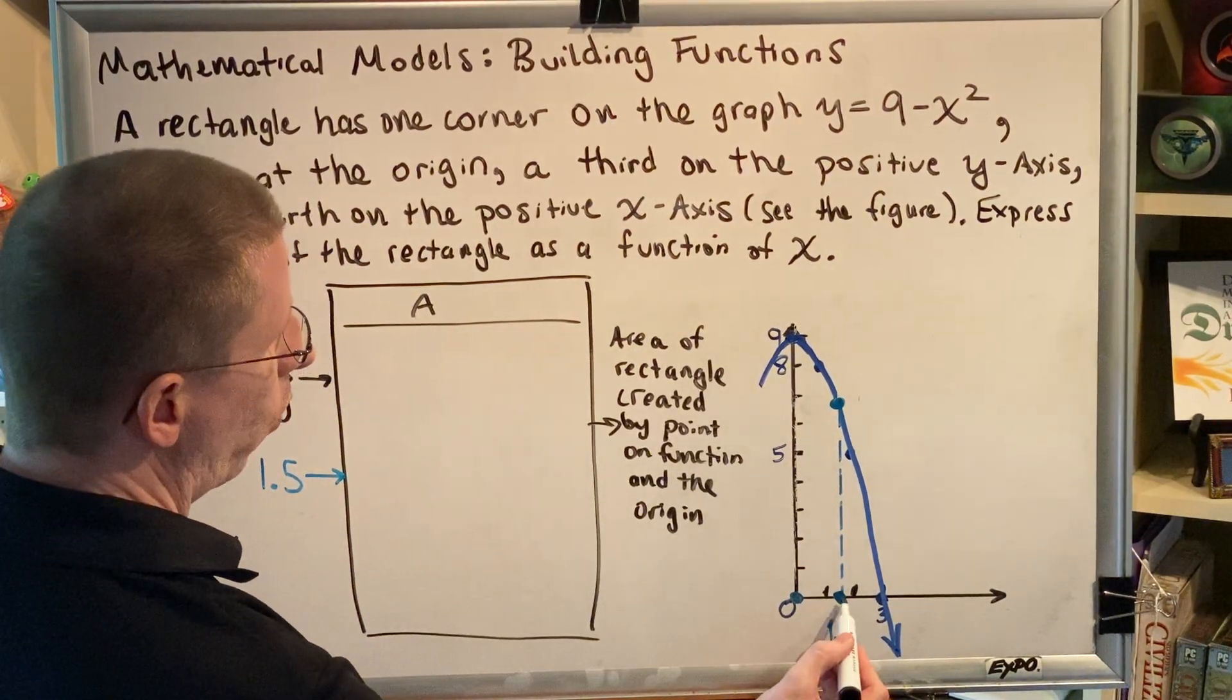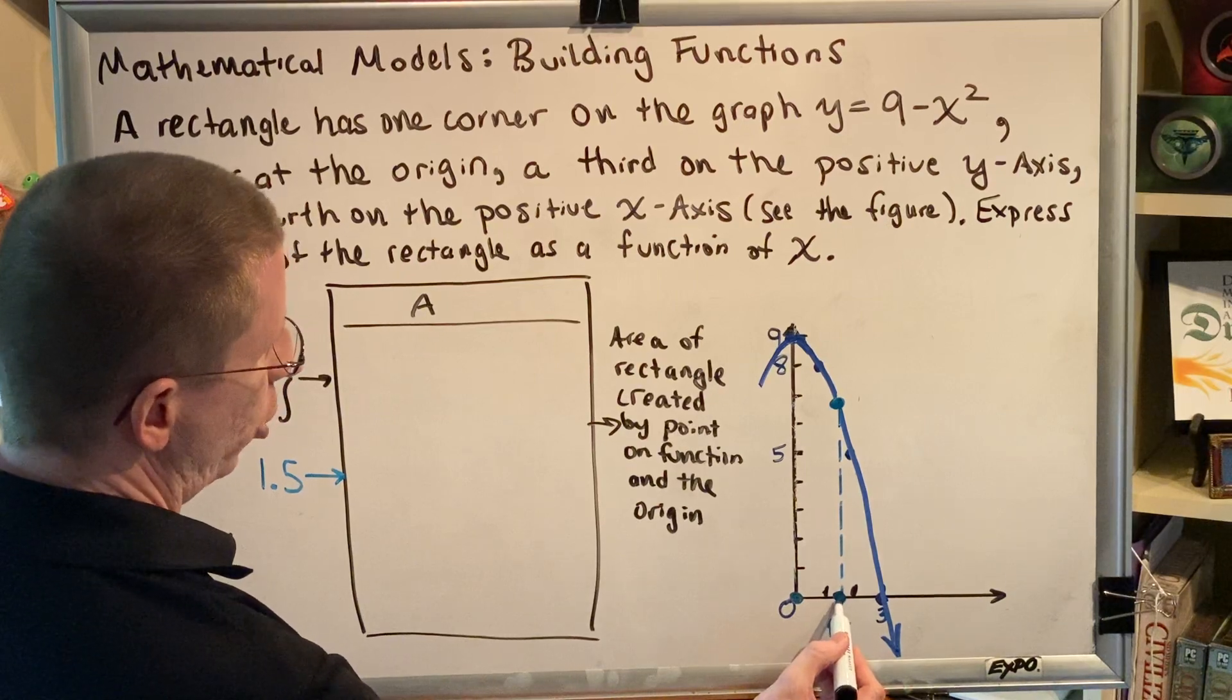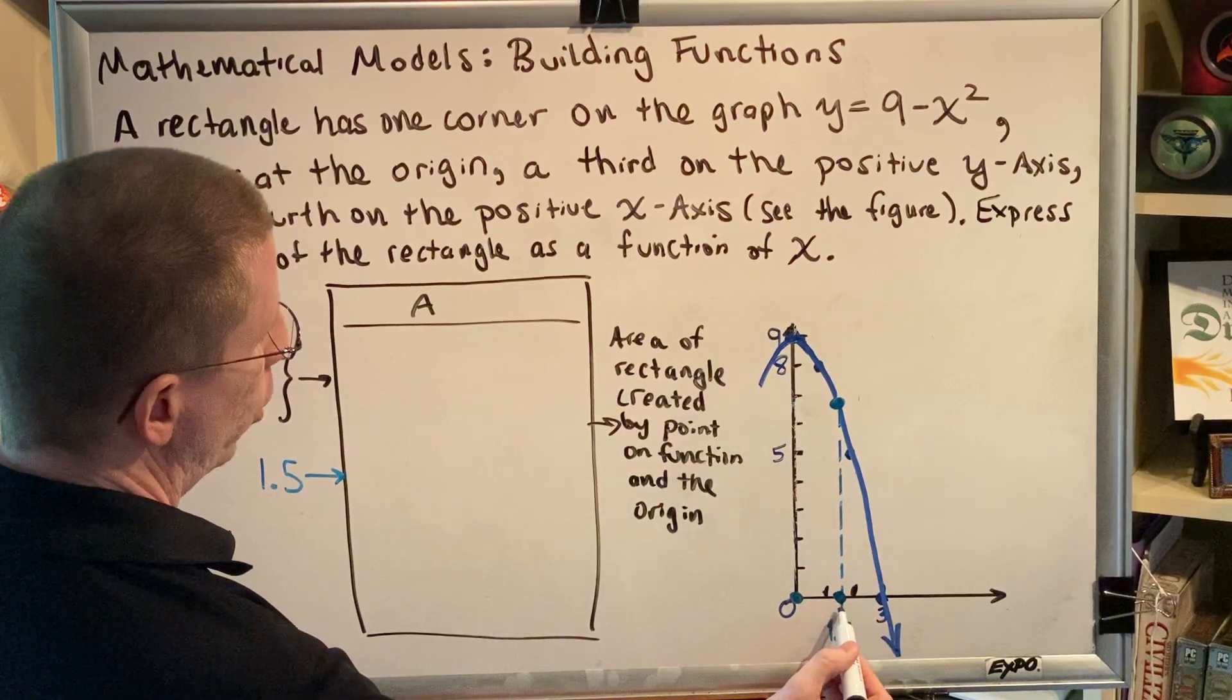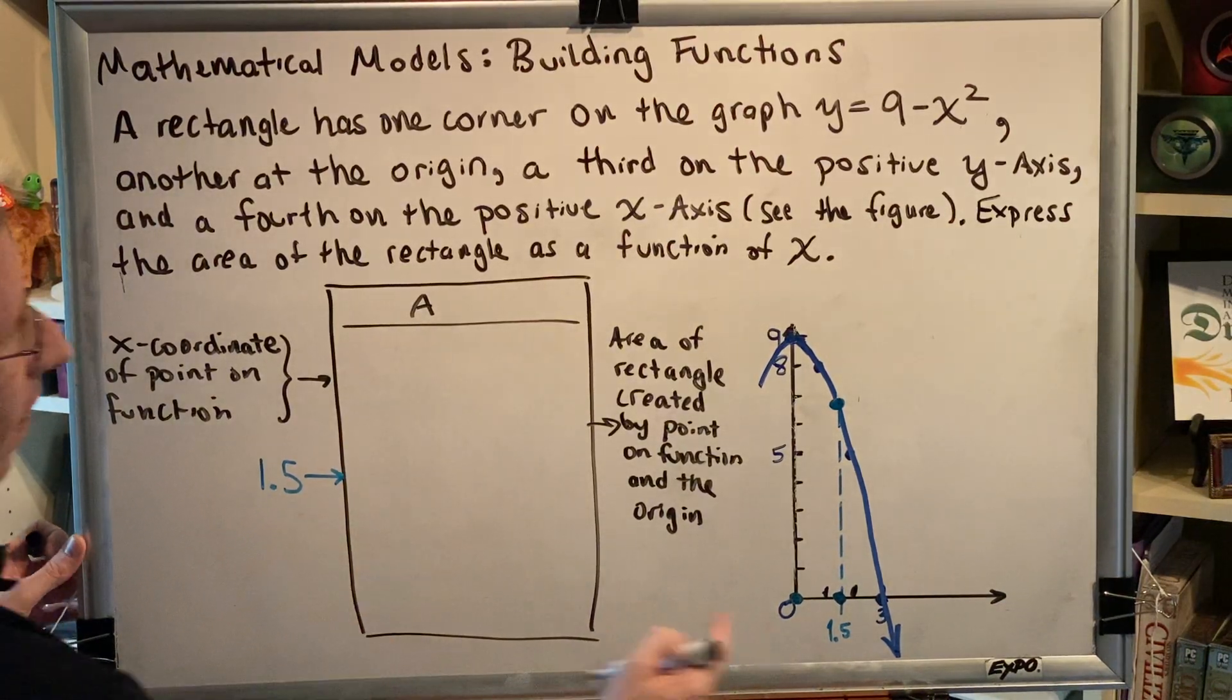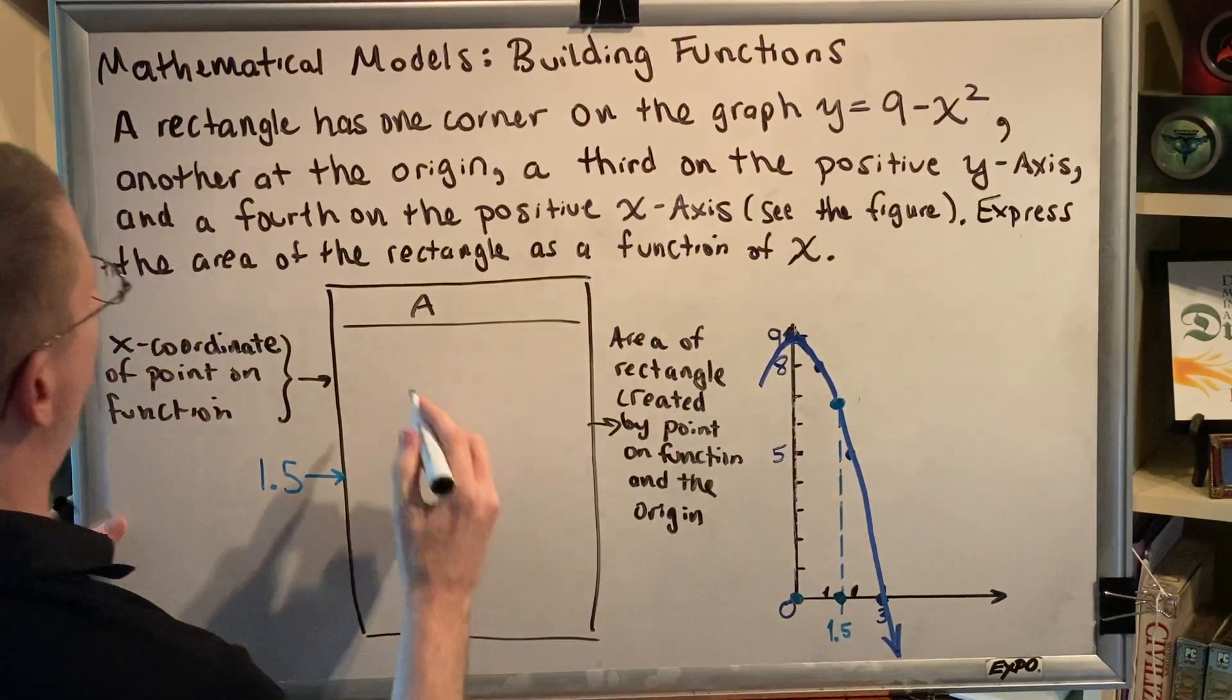It's the distance from 0 to 1.5, which is just 1.5. So whatever was the input x, that's going to be the base of our rectangle.